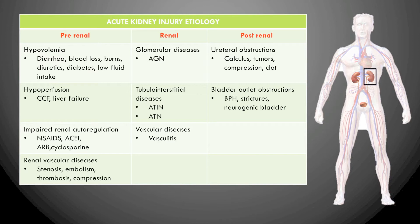Ischemic damage ultimately leads to necrosis. Liver failure causing hypoalbuminemia also reduces effective circulating blood volume. Another pre-renal cause is impaired renal autoregulation, for example when the RAAS system is not working properly — under the influence of NSAIDs, ACE inhibitors, ARBs, or immunosuppressants like cyclosporine — leading to acute kidney injury. Renal vascular disease, such as stenosis, embolism, thrombosis, or external compression by a tumor, also causes hypoperfusion.